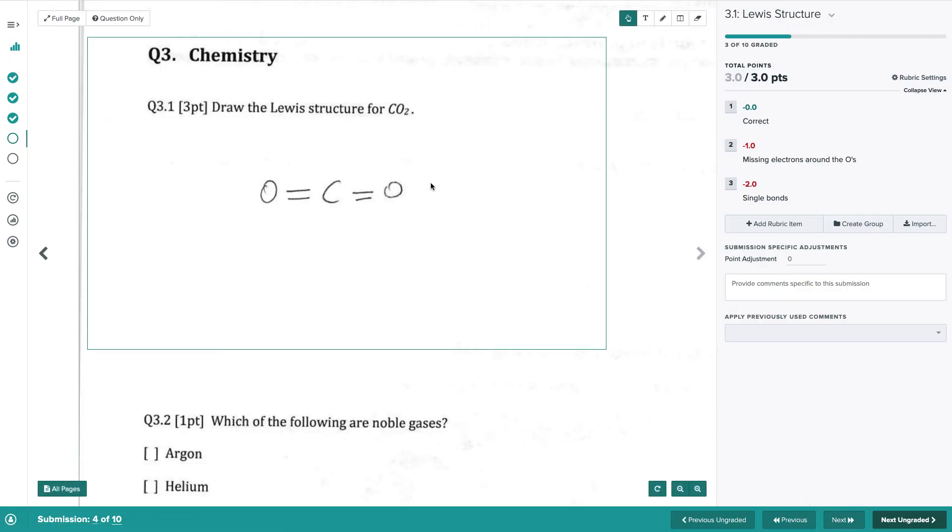This student forgot the electrons around the O's. This is a mistake we've seen before, so we simply mark the corresponding rubric entry and we are done with grading this student.